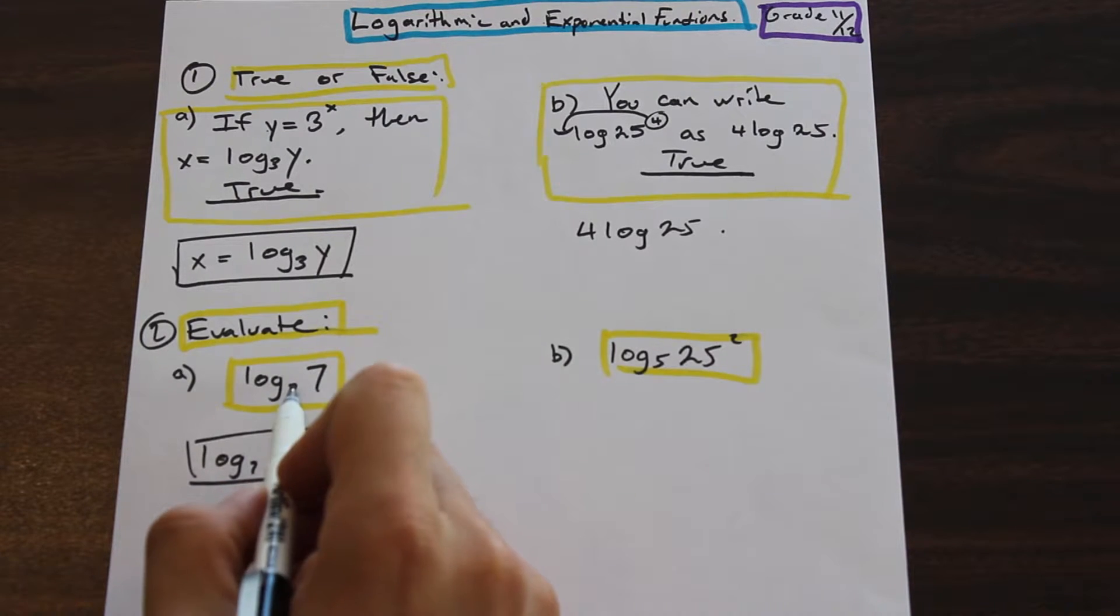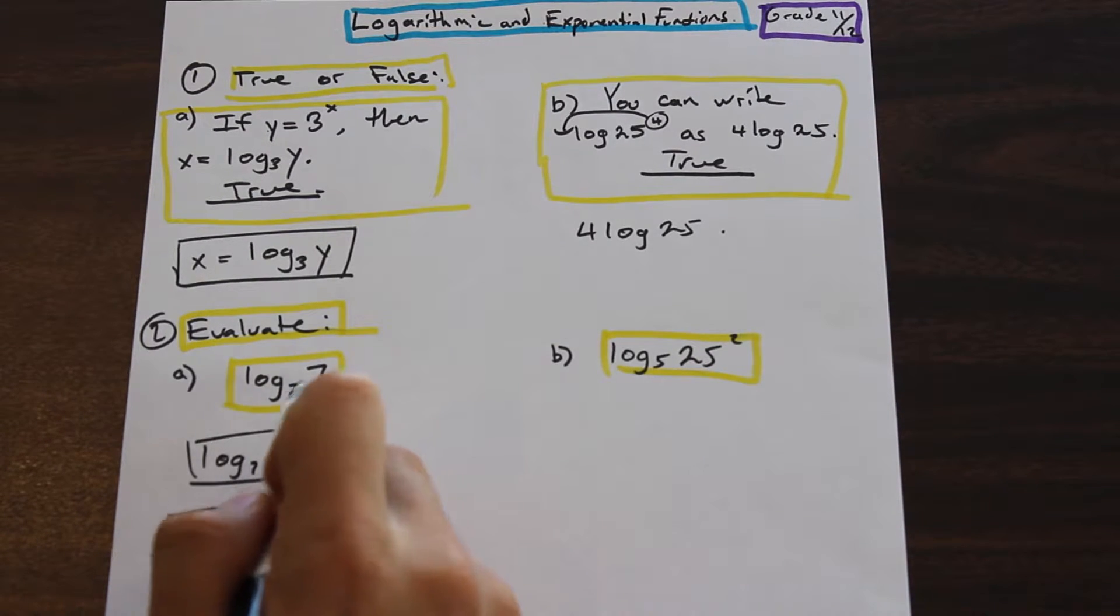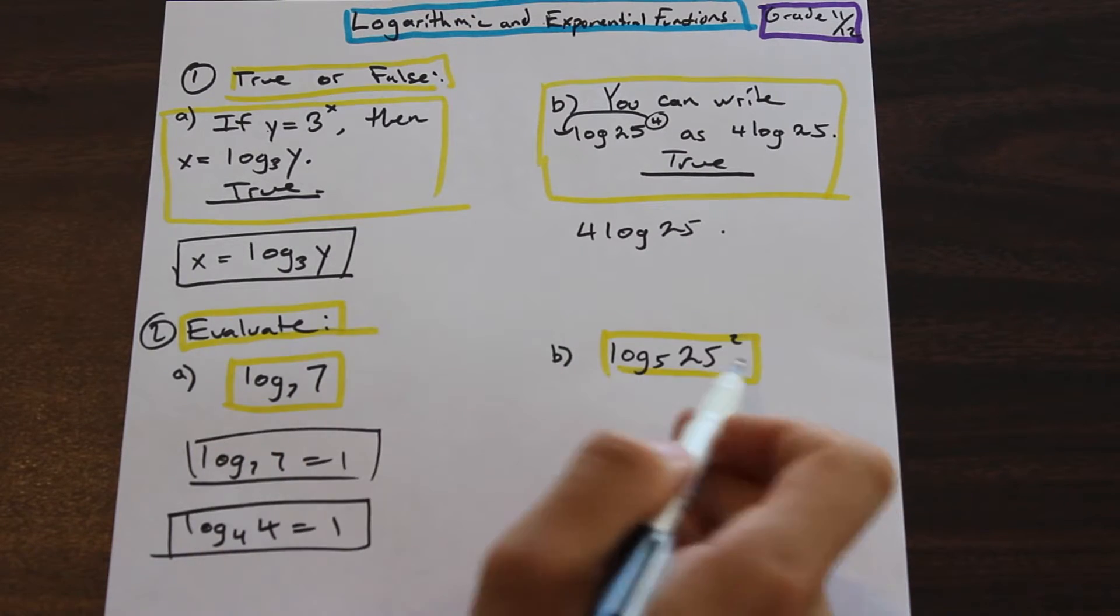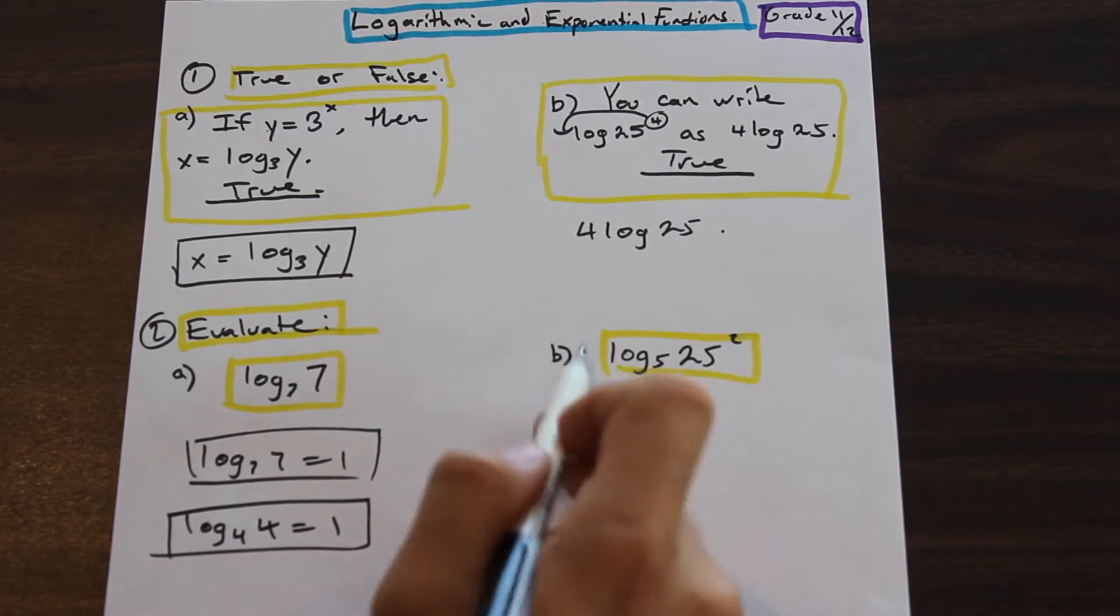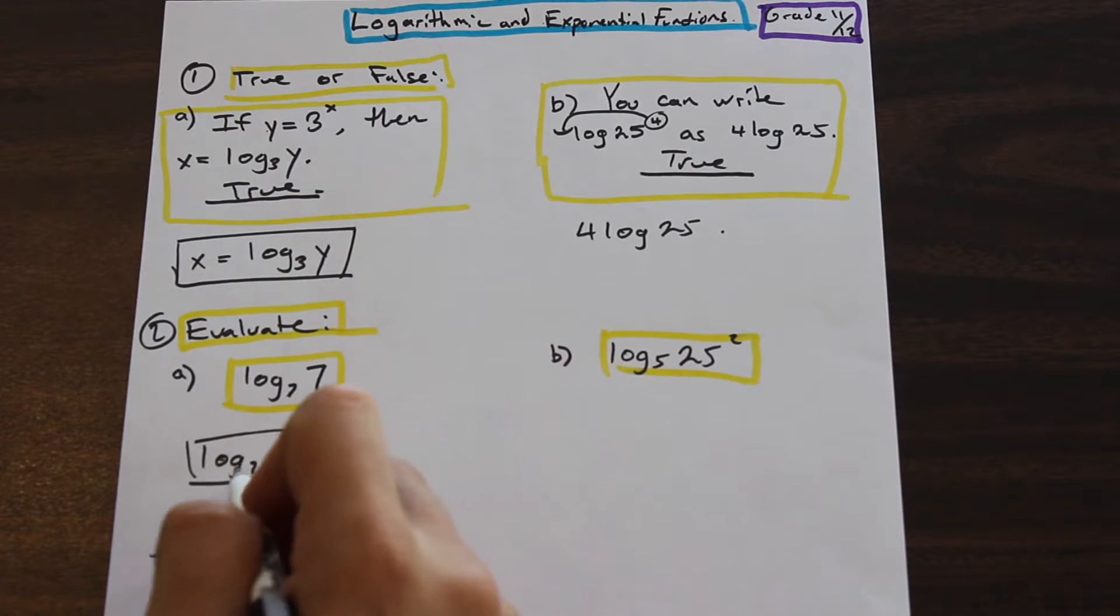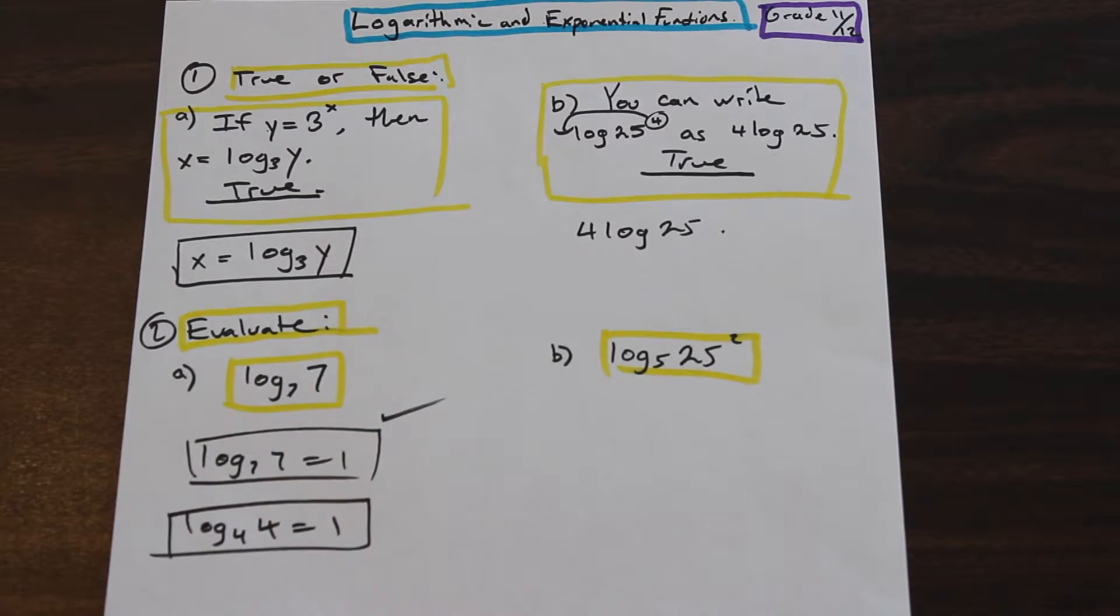If they ask you to evaluate it, in order for this to cancel out into one. And that's what we'll see in the next problem. So log seven, seven is equal to one. That's the answer there.